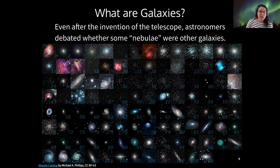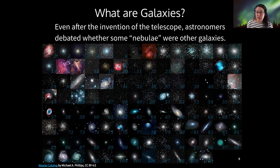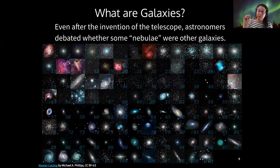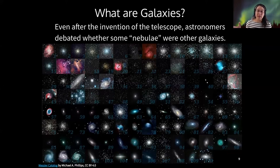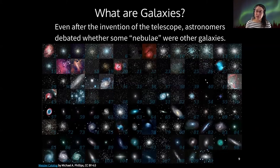It was basically a catalog of things that looked smudgy on the sky — just little fuzzy dots. The reason Messier was cataloging these was because he was a comet hunter trying to get famous for finding new comets. These were things that were clearly not comets, but they looked like comets at first glance. He wanted to make a catalog so other people interested in comets would know these were not comets — set your sights elsewhere.